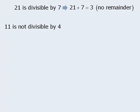For example, 11 is not divisible by 4. And notice that when we divide 11 by 4, we get 2 with remainder 3. In other words, 4 divides into 11 two times with remainder 3.